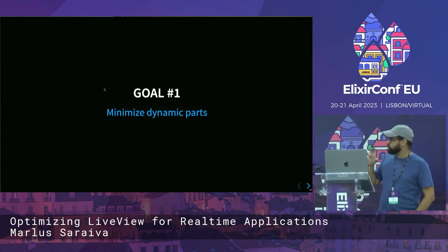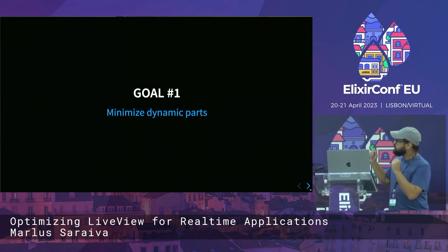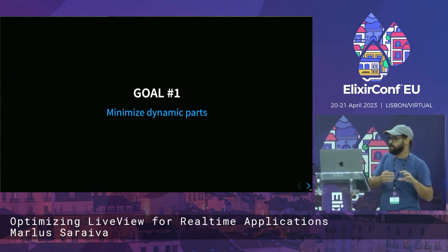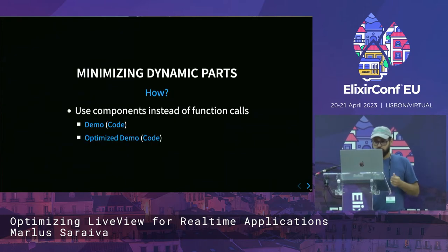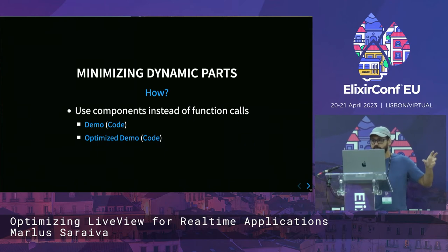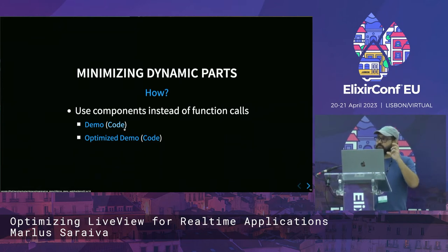Given that information, we're going to set a few goals in order to optimize. The first would be to minimize the dynamic parts, because the static parts are sent once and then not again — all the information that is resent on each update is the dynamic parts. So if you minimize the dynamic parts, you're going to get some optimization. One way to do this is to use components instead of function calls. Using function calls was something really common before LiveView. If you're converting an old template, be careful with those functions, because a function returns a string, and a string cannot be diff tracked by LiveView. If you convert it to a component, it will be able to track the static parts.